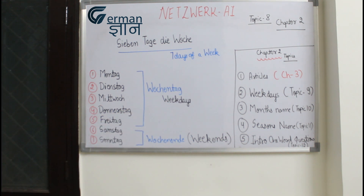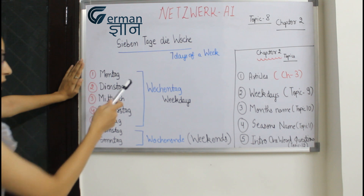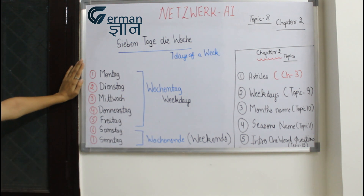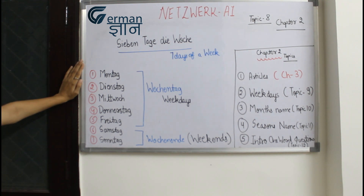So guys, as you all know, we have 7 days: Monday, Tuesday, Wednesday, Thursday, Friday, Saturday, and Sunday. I will be letting you know how to spell them and how to say them in the German language. So without wasting time, let's go.